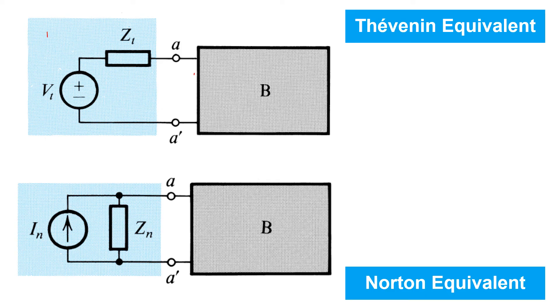Let's consider the Norton equivalent of the Thevenin circuit A at the top left. In order to find its Norton equivalent, step one was to find the short circuit current.